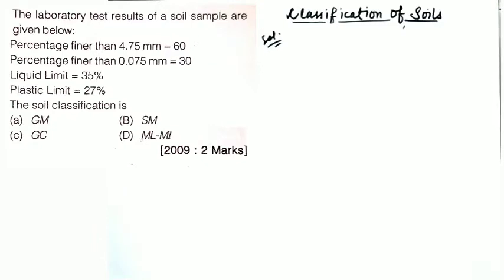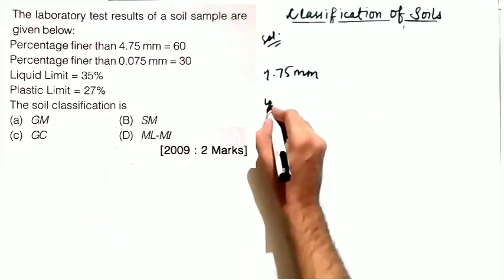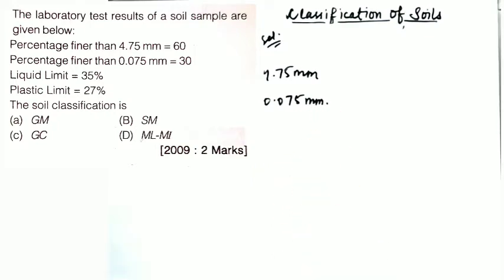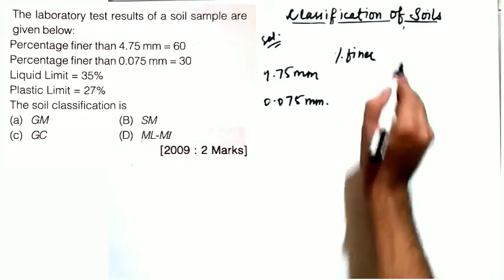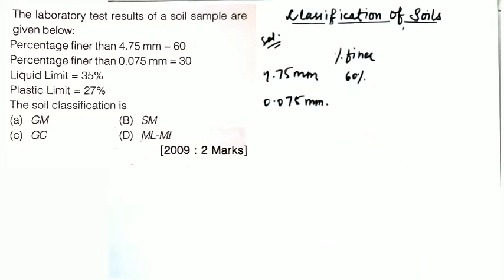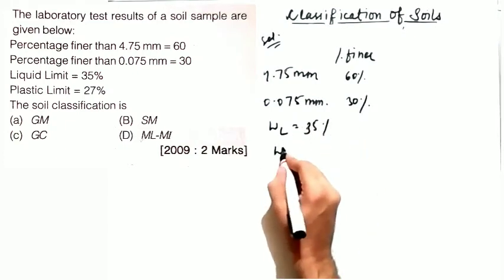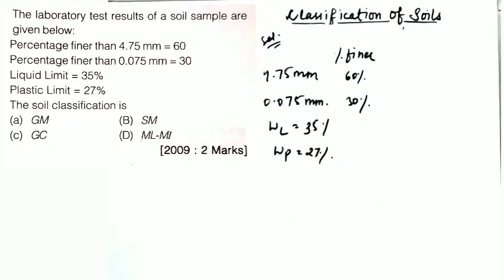The next question gives laboratory results: percentage finer than 4.75 mm sieve is 60%, percentage finer than 0.075 mm sieve is 30%, liquid limit WL = 35%, and plastic limit = 27%. The answer options are GM, SM, GC, and ML/MI — you must determine the correct classification.